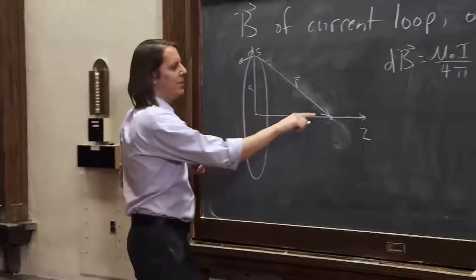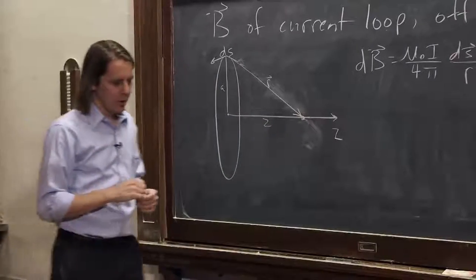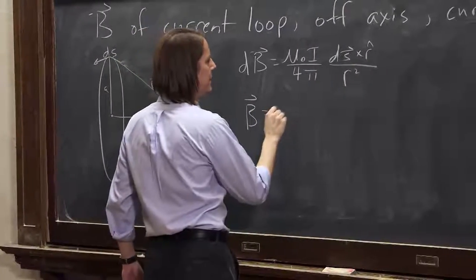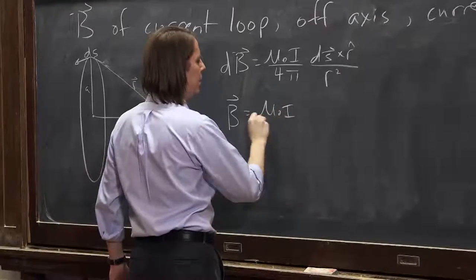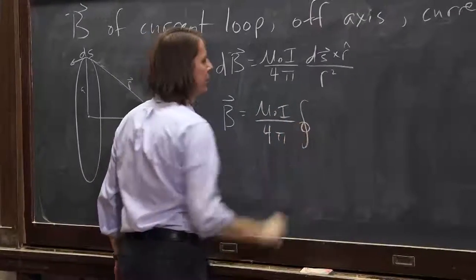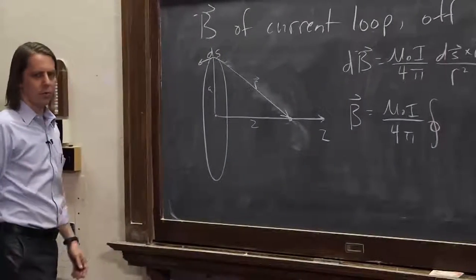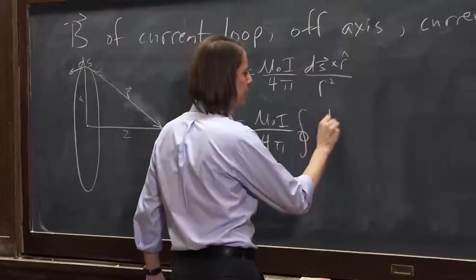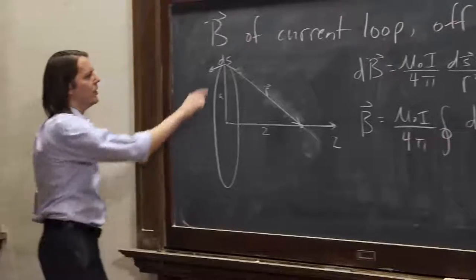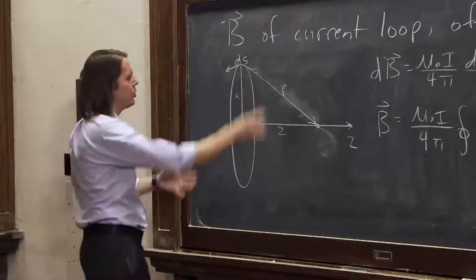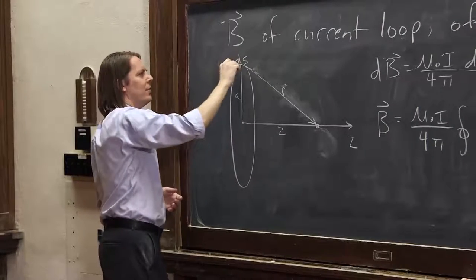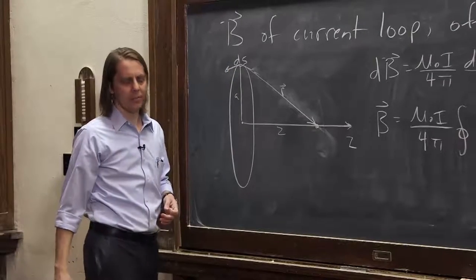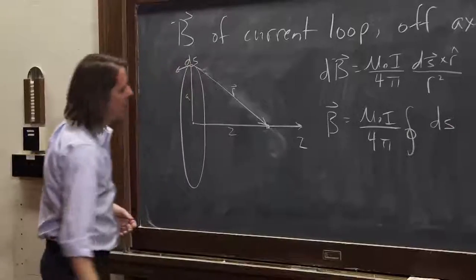So all we've got to do is add up the field we get here as we go around the circle. Okay. So let's see. B is going to be, let's pull out, go ahead and pull out what constants we know we have. Mu naught I over 4 pi times the integral around a circle. We have dS cross r over r squared. Okay. Well, we know dS is dS.